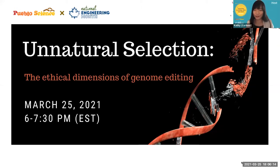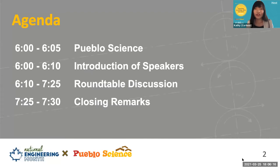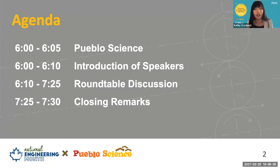Our agenda for the evening is as follows: we'll give a brief introduction to Purple Science and our club's mission, then introduce our amazing panelists. We'll then jump to the bulk of our discussion on the ethics of genome editing, with an introduction to the controversy surrounding gene editing on two baby girls in China. At around 6:15 we'll start our roundtable discussion until 7:25.